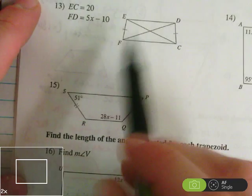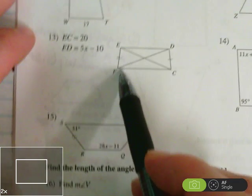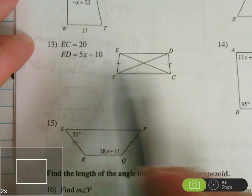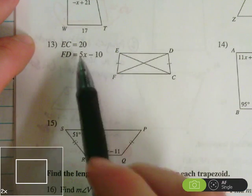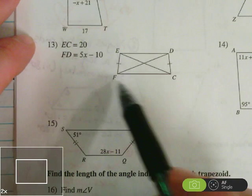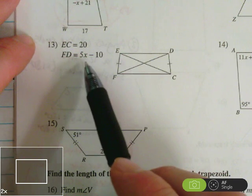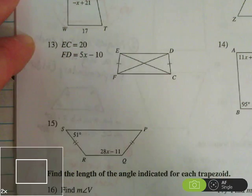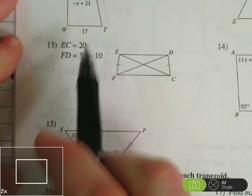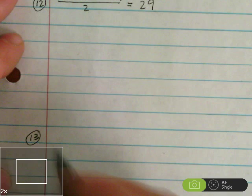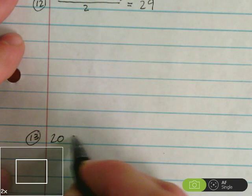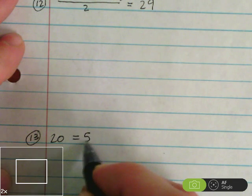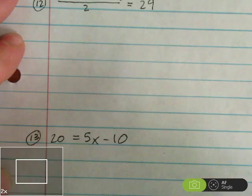In number 13, this is an isosceles trapezoid. So we've got that the two sides are equal. We have EC is 20 and FD is 5x minus 10. In an isosceles trapezoid, the diagonals are congruent. So 20 is equal to 5x minus 10. So 20 equals 5x minus 10.